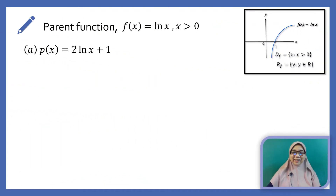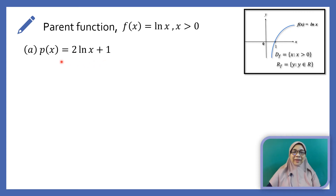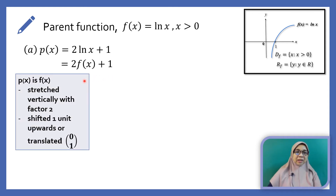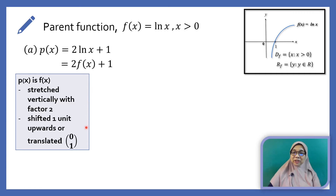Let's look at the first example: graphing the function b(x) equals 2 ln x plus 1. How is b(x) related to f(x)? We can rewrite b(x) as 2f(x) plus 1. The 2 in front of f(x) indicates the graph is stretched vertically with factor 2. The plus 1 indicates we need to shift the graph 1 unit upwards, or carry out the translation (0, 1).